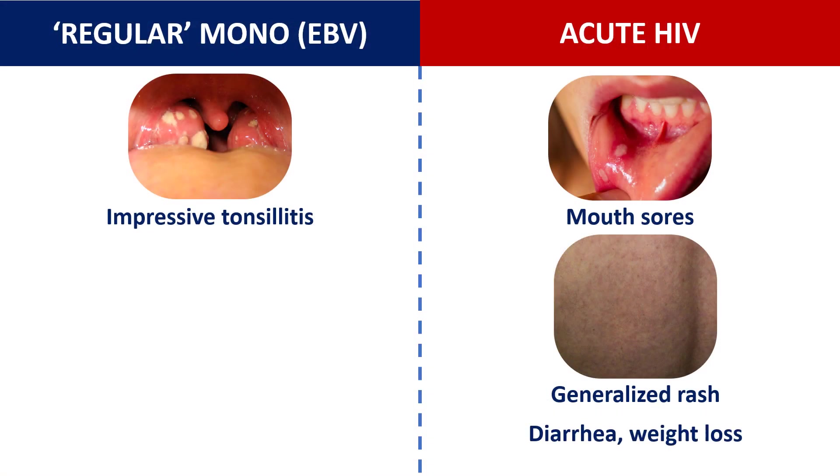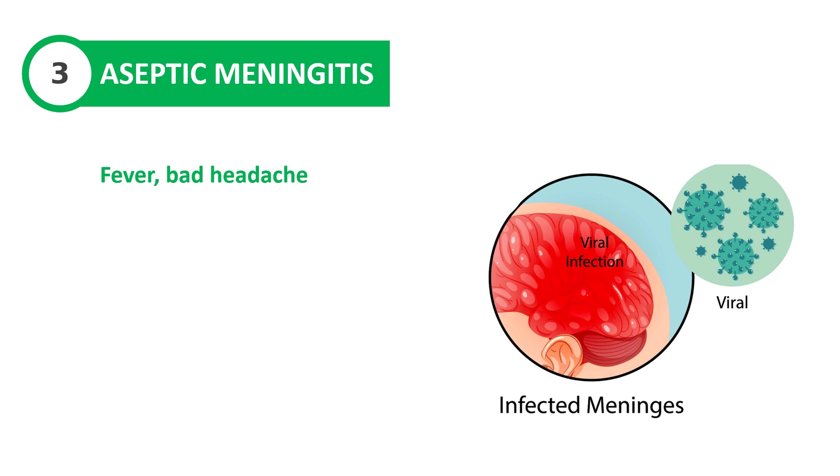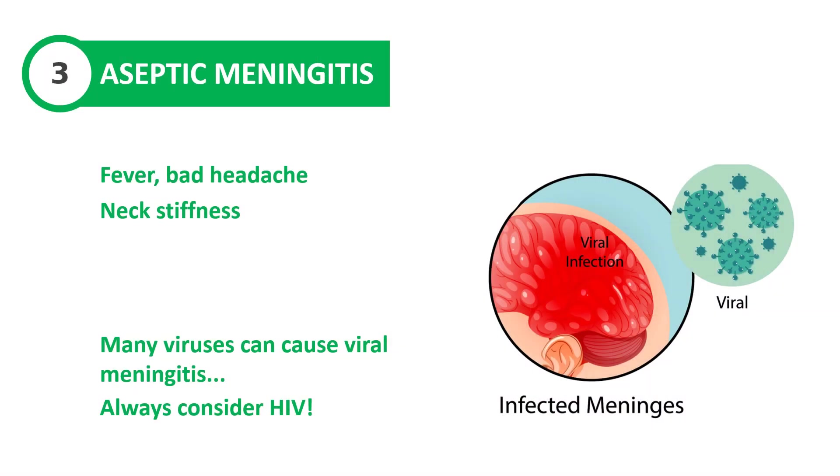Another common symptom of acute HIV infection that you won't find in infectious mononucleosis is diarrhea. Many patients with acute HIV will present with gastrointestinal problems and can even lose an impressive amount of weight in a very short period of time — again, not typical for infectious mononucleosis. And finally, patients with HIV can present with aseptic meningitis: severe headache and fever. So if you have a patient with aseptic meningitis and you don't know the cause, always at least consider HIV — though this presentation is not as common as mononucleosis-like syndrome.